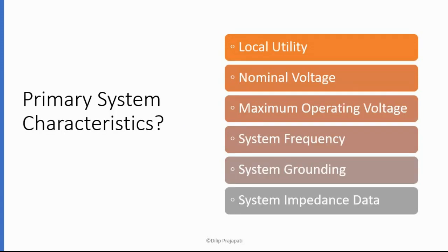Primary system characteristics covers local utility nominal voltage, maximum operating voltage, system frequency, system grounding, and system impedance data.